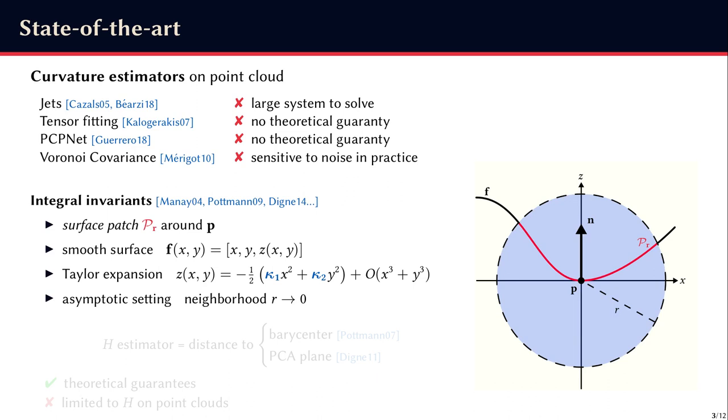There is another family of work that inspired our method, called integral invariance, illustrated in 2D here. The analysis is focused on one point P of a hypothetically smooth surface F, defined as a height field over the tangent plane at P. The height Z is defined by a very generic Taylor expansion, where we can see that principal curvatures kappa1 and kappa2 appear at order 2 of the polynomial.